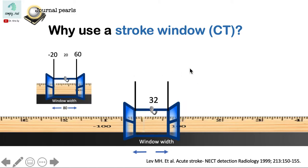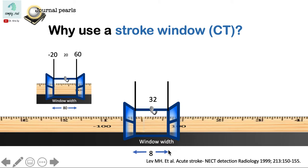The stroke window, on the other hand, is centered at a higher level at 32, compared to the brain window center which is 20. The stroke window also has a much more narrow window width, which is 8 compared to 80.